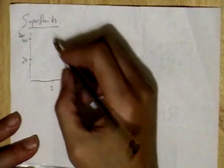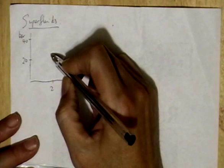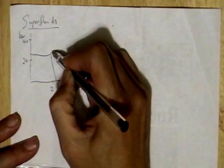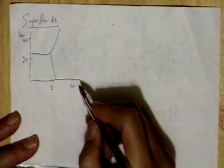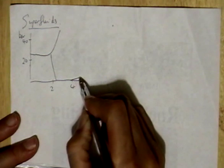Right, the phase diagram looks like this. There's a line coming down here, curve going up there, the line going there.